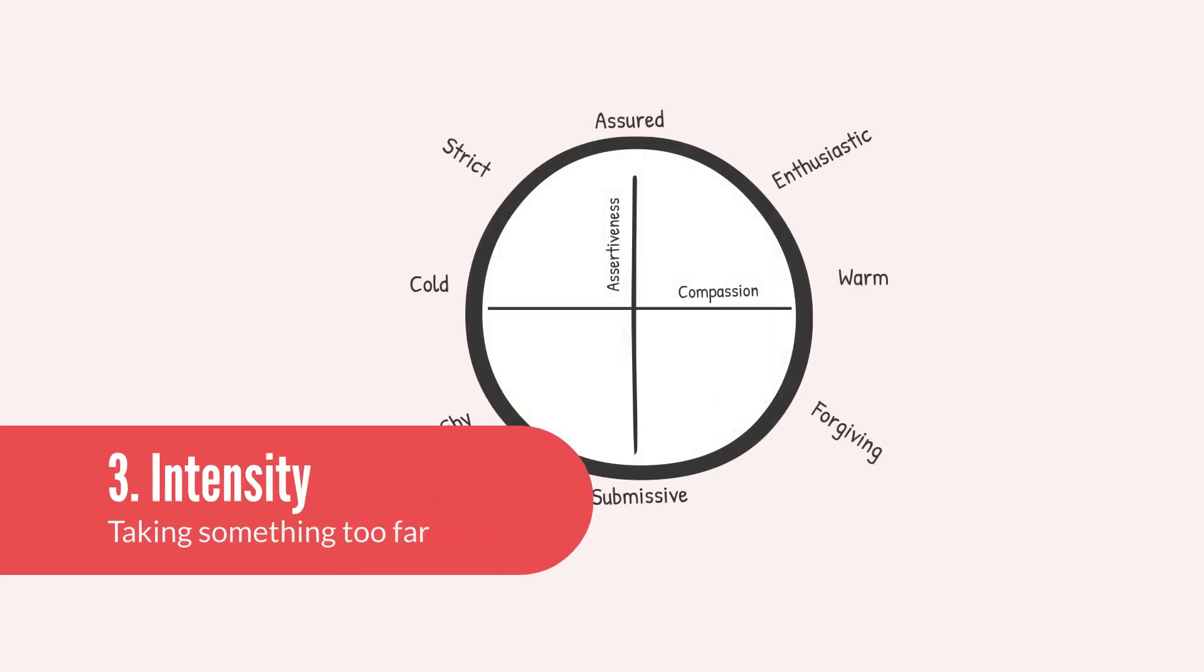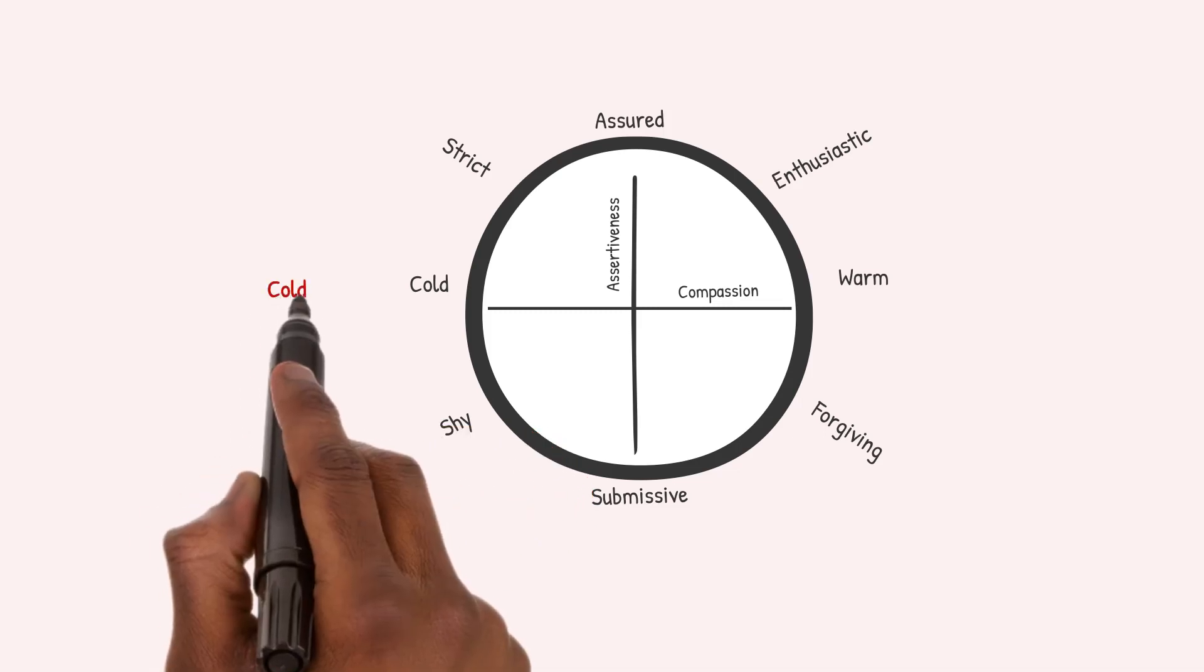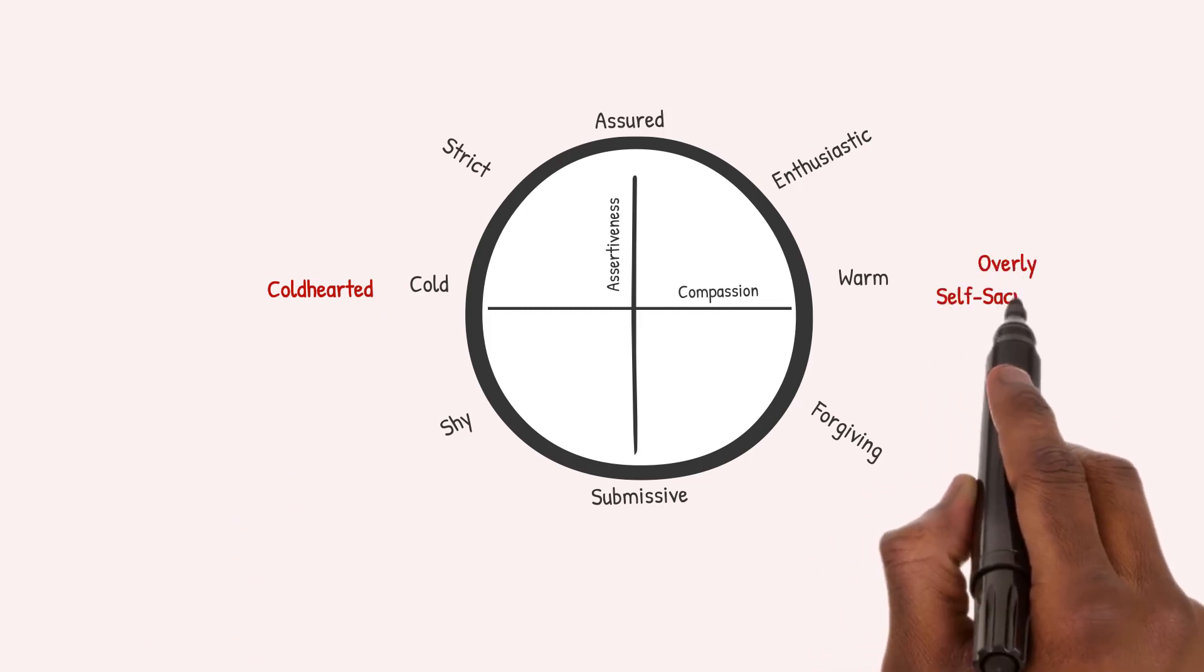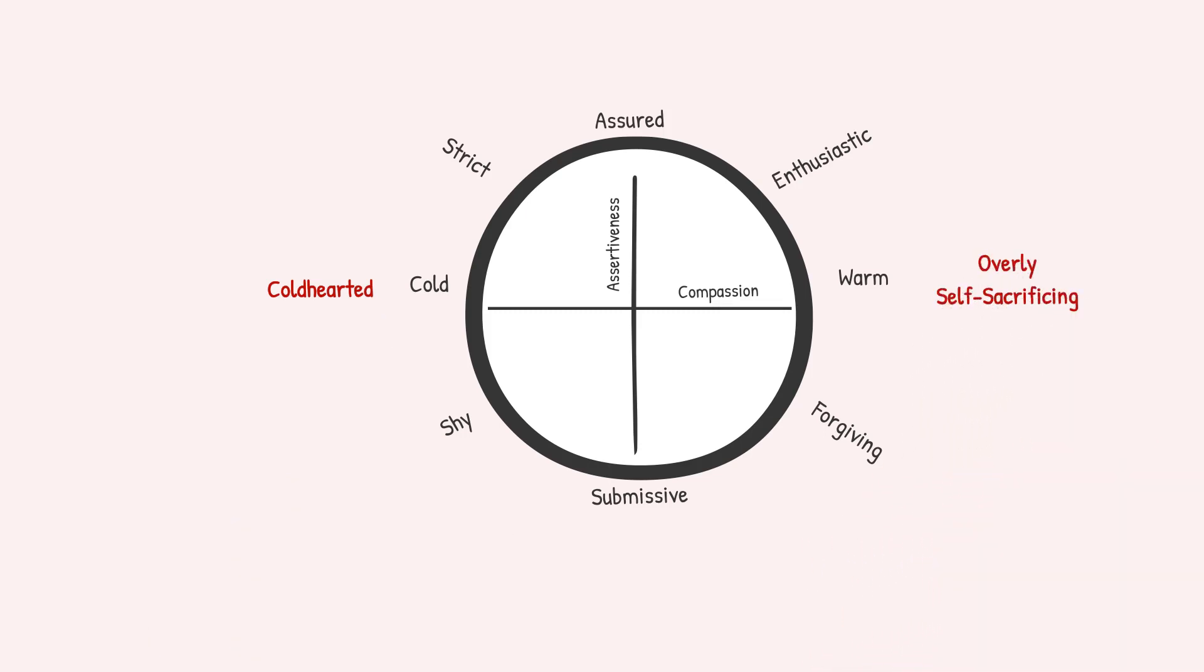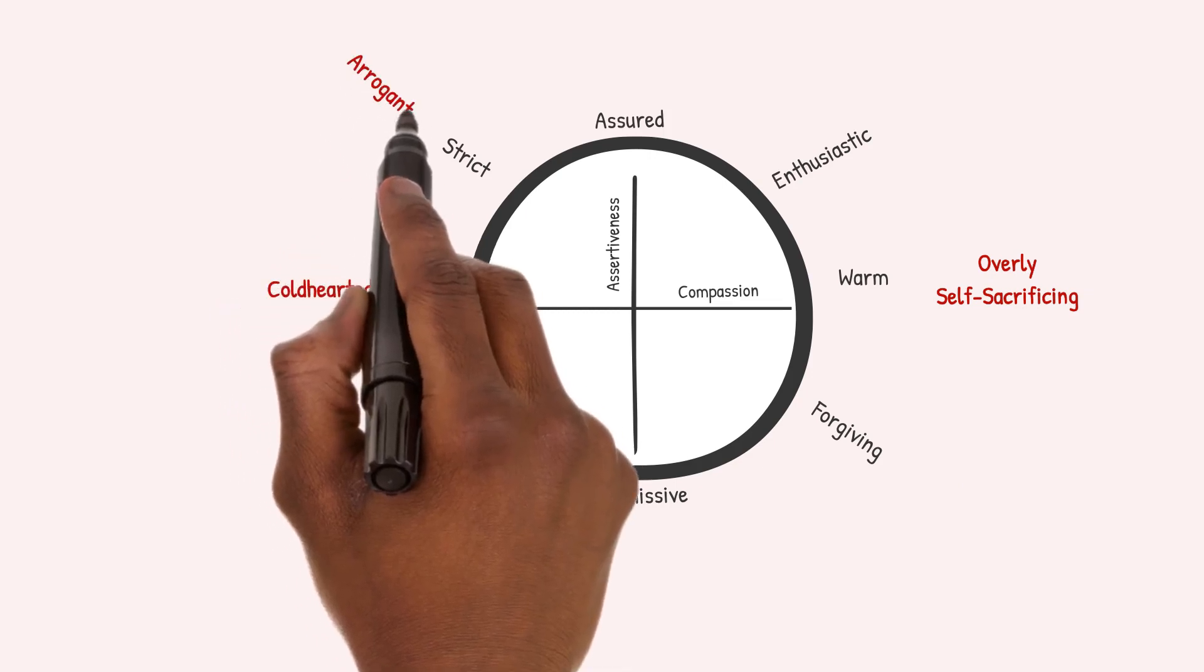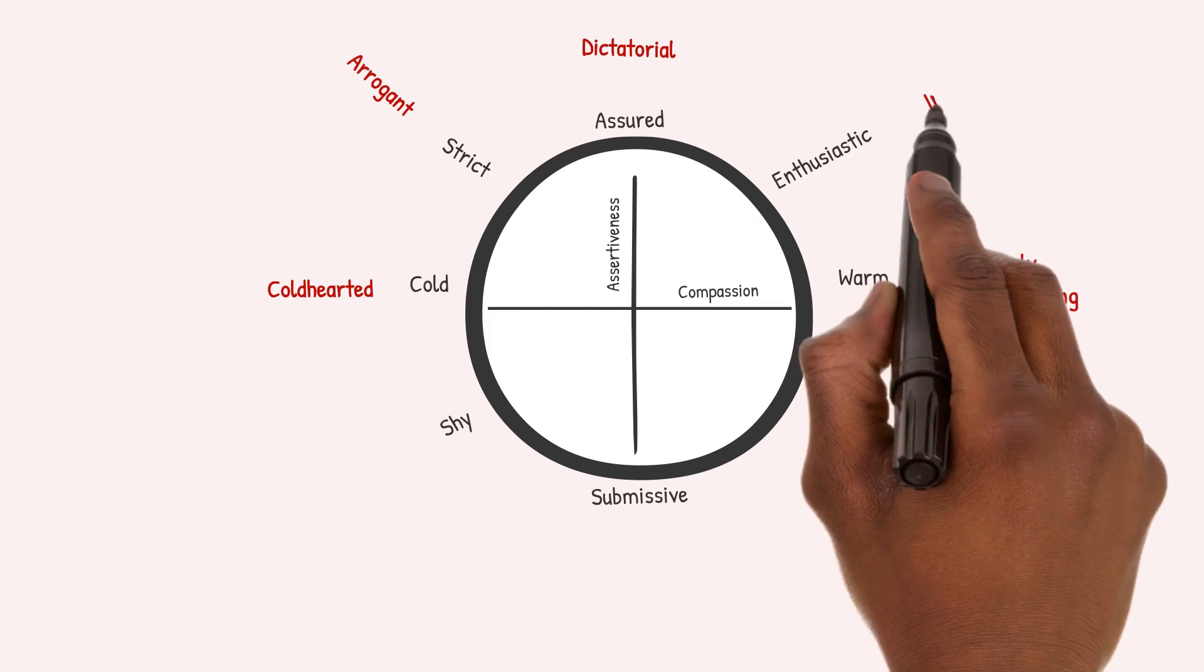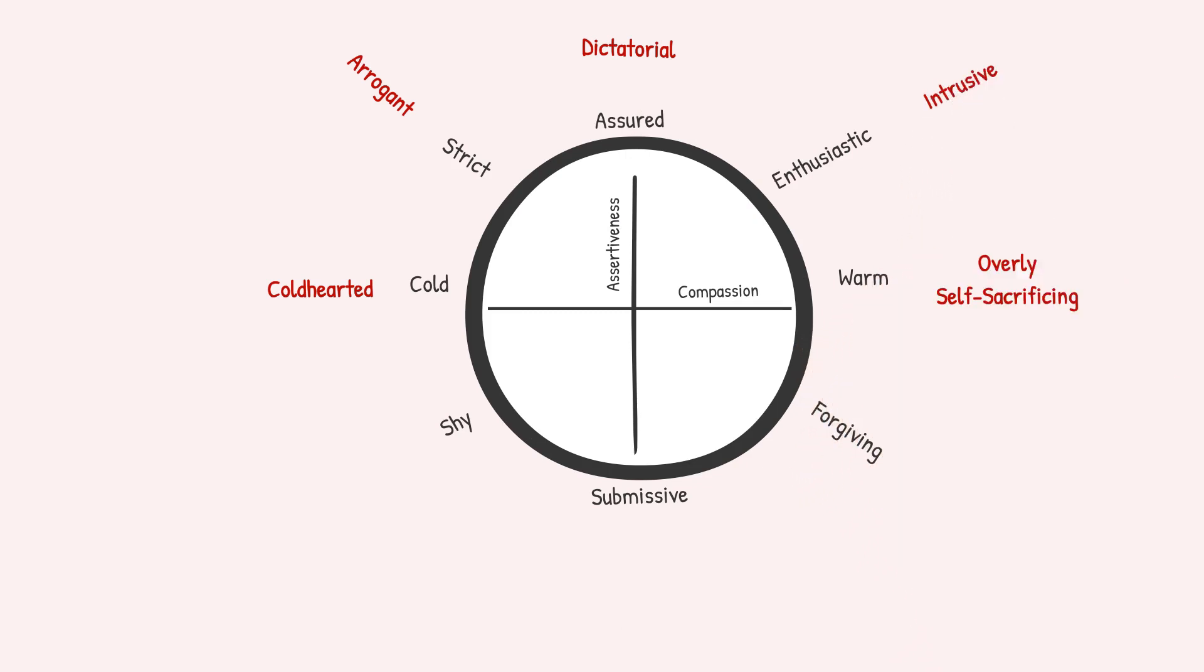Third, people are frustrated when you take something too far. Any point on this circumplex can be taken to excess. Coldness can turn into cold-heartedness, and warmth can turn into overly self-sacrificing behavior. Along the upper half of the circle, strictness can turn into arrogance, agentic behavior can become dictatorial, enthusiasm can turn into intrusiveness. On the lower side, shyness can turn into avoidance, submissiveness can turn into a lack of assertiveness, and being too forgiving can make you gullible and exploitable.